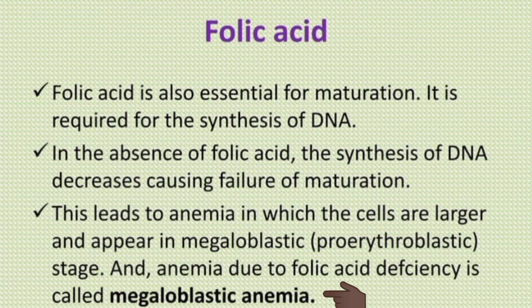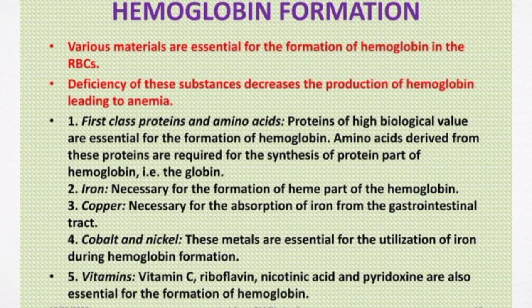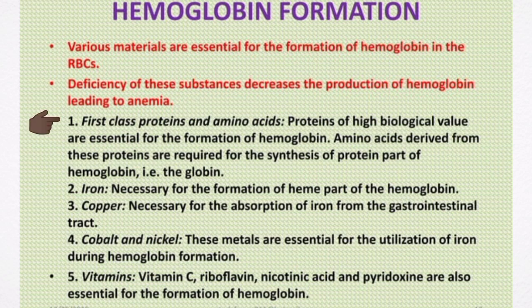Now let's talk about the factors necessary for hemoglobin formation. Various substances are essential for the formation of hemoglobin in red blood cells; deficiency of these substances decreases the production of hemoglobin, leading to anemia. The first class of factors are proteins and amino acids. Proteins of high biological value are essential for the formation of hemoglobin, and amino acids derived from these proteins are required for the synthesis of the protein part of hemoglobin, known as globin.